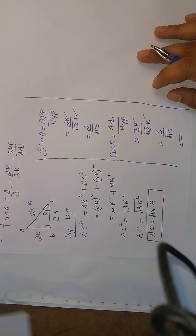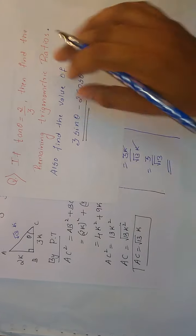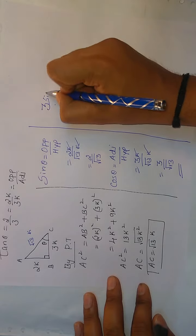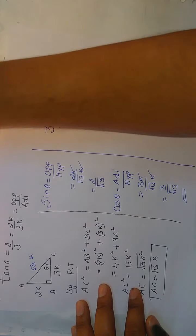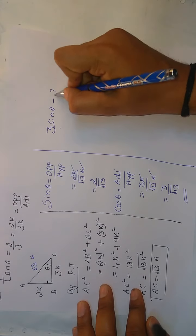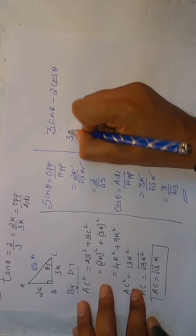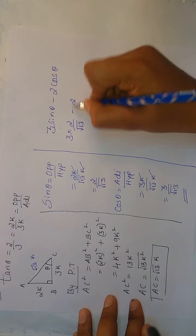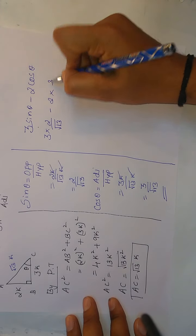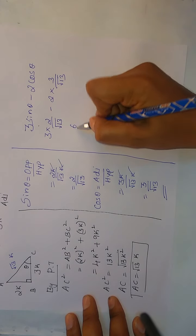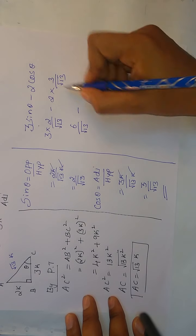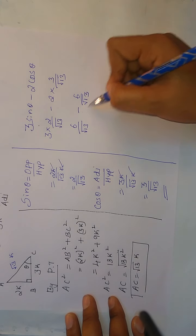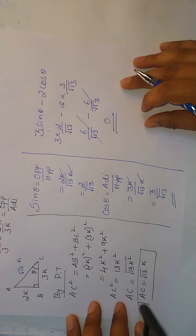Now I am going to find the value of this one: 3 sin θ minus 2 cos θ. 3 times the value of sin θ is 2 by √13 minus 2 times cos θ 3 by √13. So 3 times 2 is 6 by √13, 2 times 3 is again 6 by √13. So 6 by √13 minus 6 by √13 cancel, 0 is the answer.